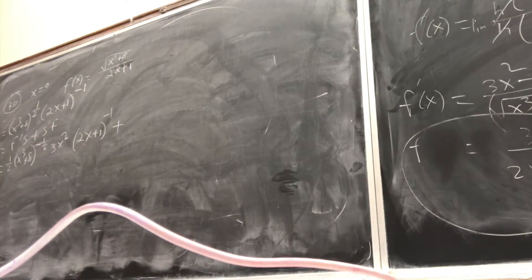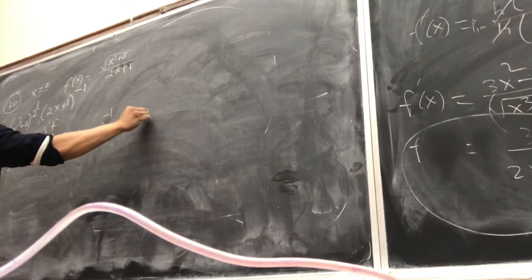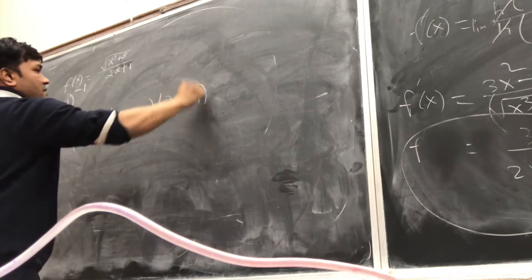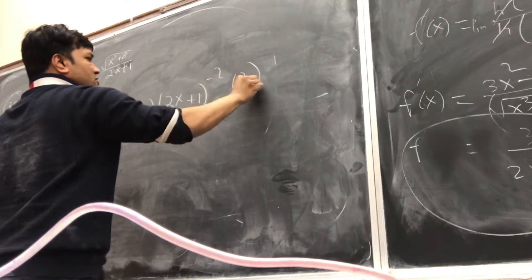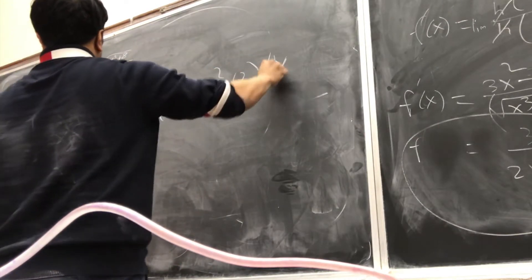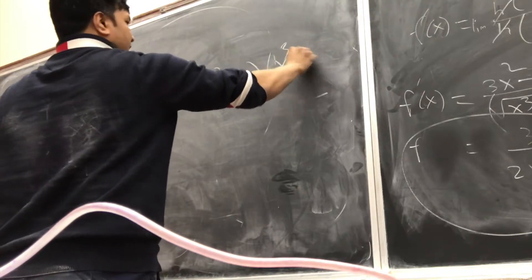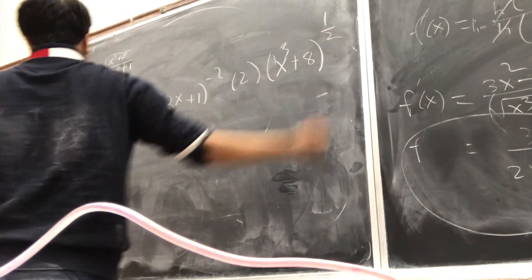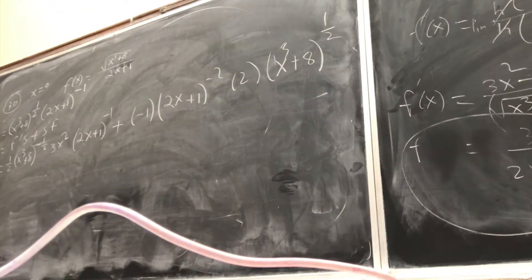Derivative of second. Minus 1, 2x plus 1 to the minus 2, times 2. Times first, x cubed plus 8 to the half. I agree this one was not super easy.